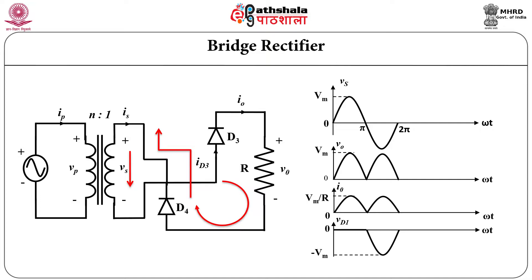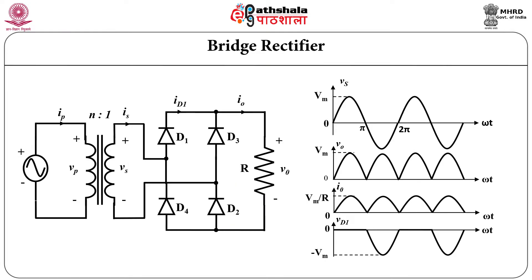What changes is the diode voltage when the diode is off. The diode voltage is much lesser than in the center tap configuration. This is the full waveform for the bridge rectifier.